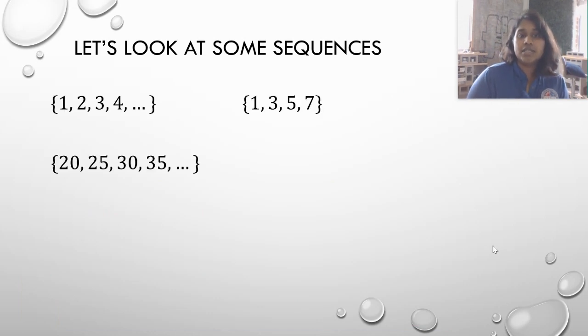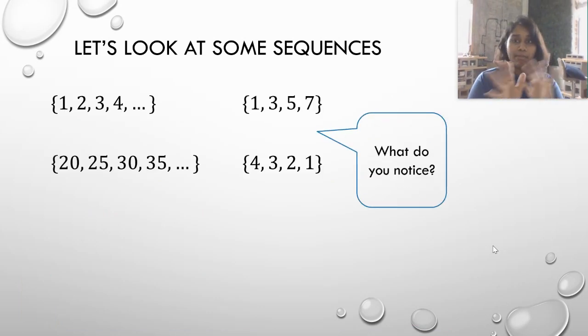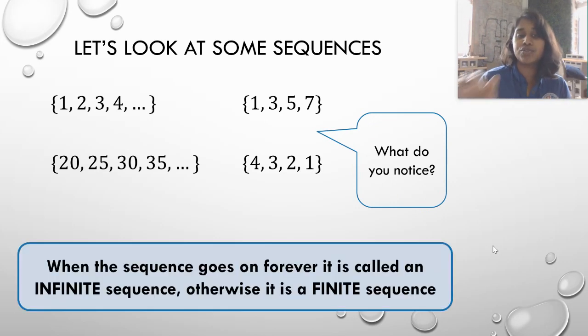So looking at some sequences, do you notice anything majorly different between the left and the right hand side? If you went, oh, the dot dot dot is missing, then you got our first two vocab words. When you have a dot dot dot, this is called an infinite sequence. It means the sequence continues on and on forever following that same pattern. If we have a finite sequence, then this is just it. The sequence is just one, three, five, seven, and that's it. It doesn't continue on.